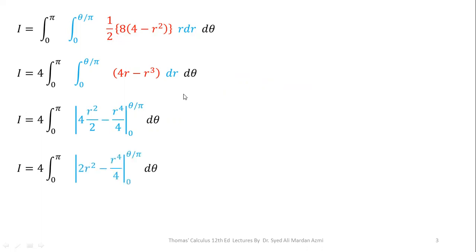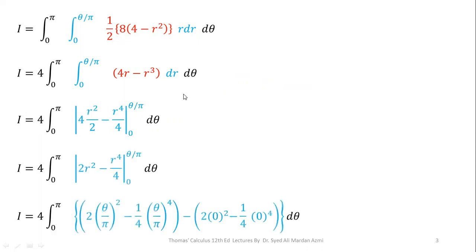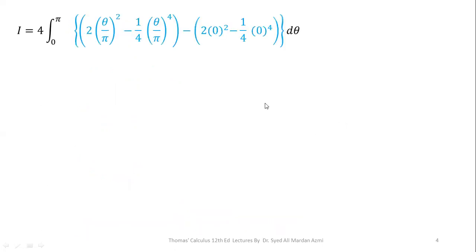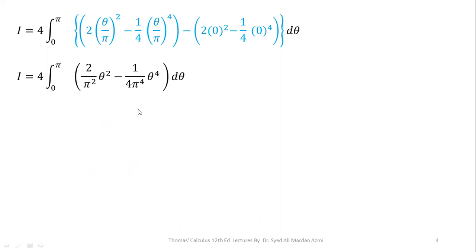In the next step, we apply the limits after simplification — upper limit minus lower limit. For the upper limit, R is replaced with theta over pi, and for the lower limit, R is replaced with 0. After making the simplification, we have (2 over pi squared) times theta squared minus (1 over 4 pi to the power 4) times theta to the power 4. This completes the integration with respect to R.